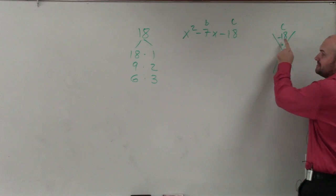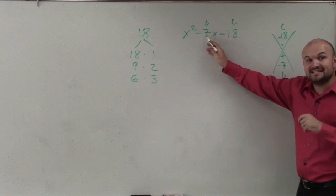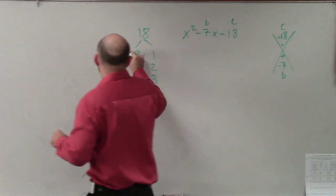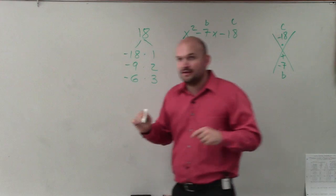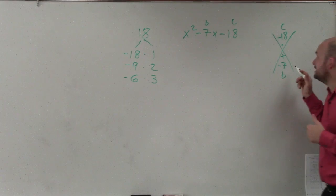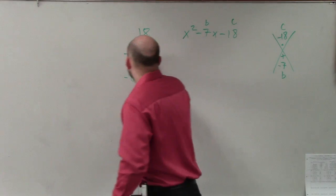And then you think, all right, it's giving me a negative 18, and it's adding to give me a negative. That means all the larger factors have to be negative. Which of those add up to give me a negative 7? Negative 9 and 2. Right.